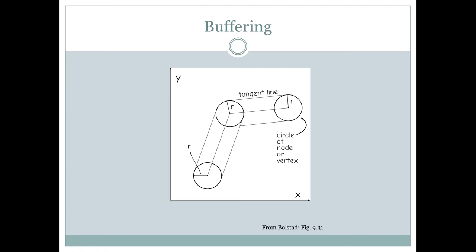In order to make these buffers, we're keeping the distance from the line constant, and then around each of the places where the direction of the line changes, we can think of that as a circle and then we're just taking this outer envelope or a tangent line around all of these things in order to create the buffer for this line.